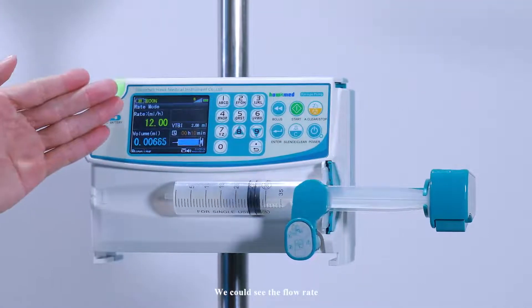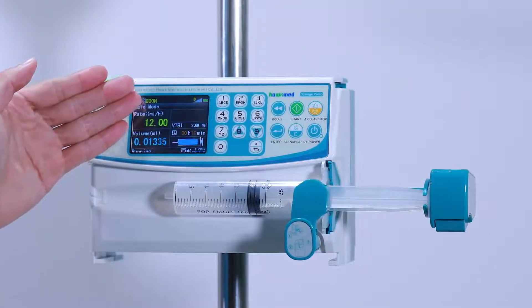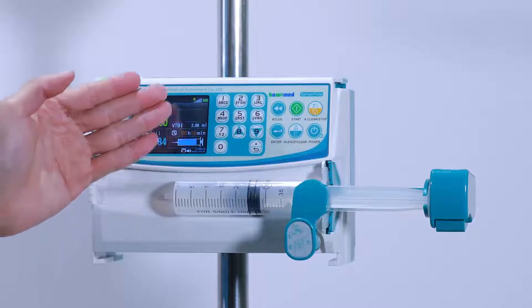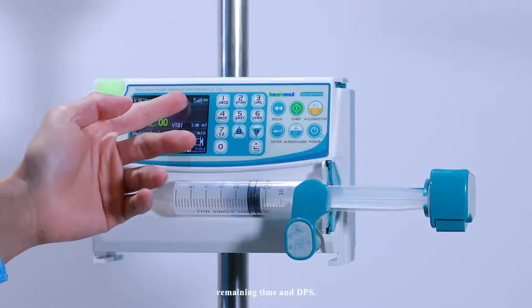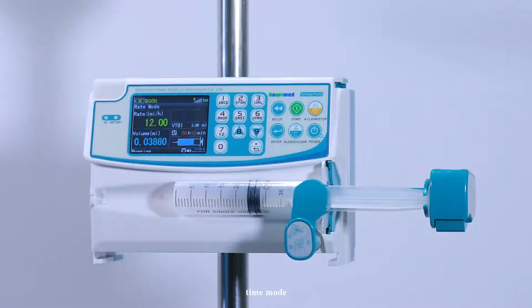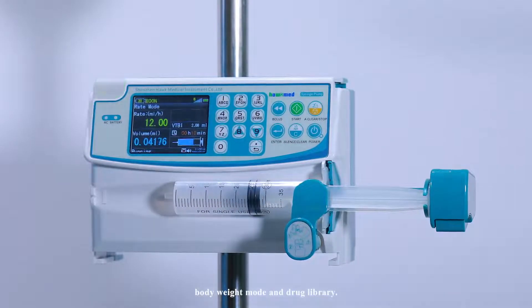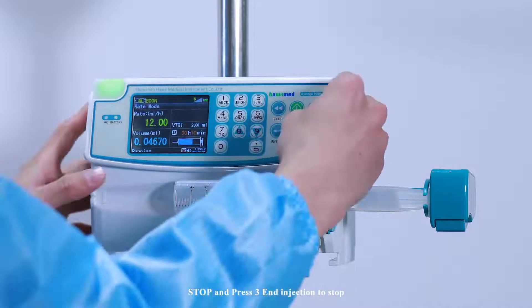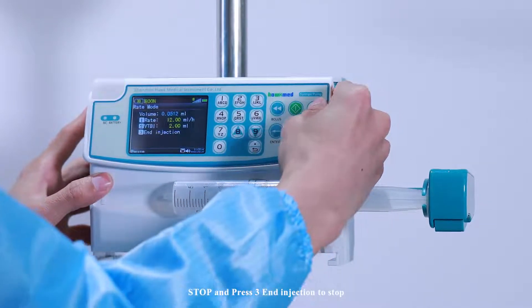We can see the flow rate, total volume, remaining time, and DPS. As an example, we shall show rate mode, time mode, body weight mode, and drug library. Press stop and press 3 and injection to stop.